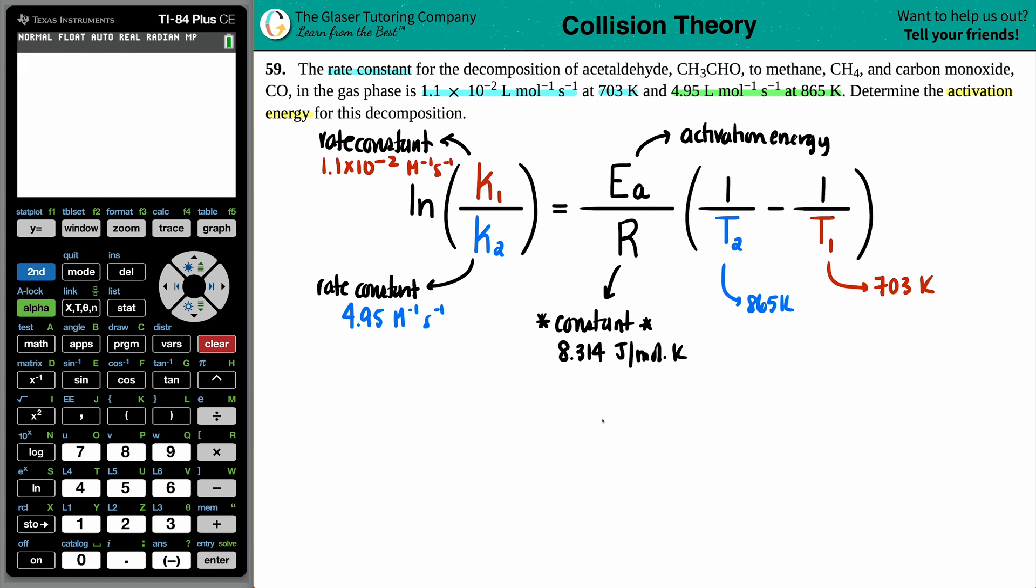Now let's plug in what we know and try to solve. LN of, we have the 1.1 times 10 to the negative second on the top divided by 4.95 equals activation energy, which is X divided by 8.314 times now one divided by something minus one divided by something. The temps are going to flip, right? So the blue one goes first, 865 minus 703.